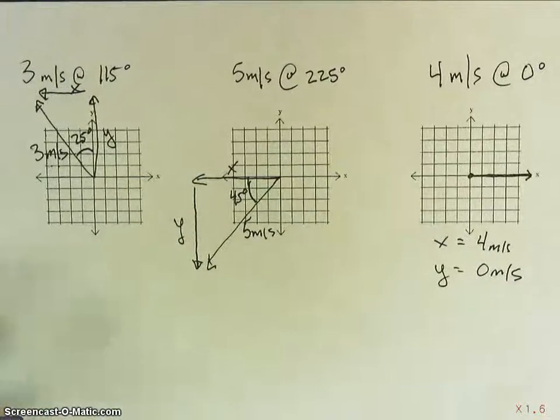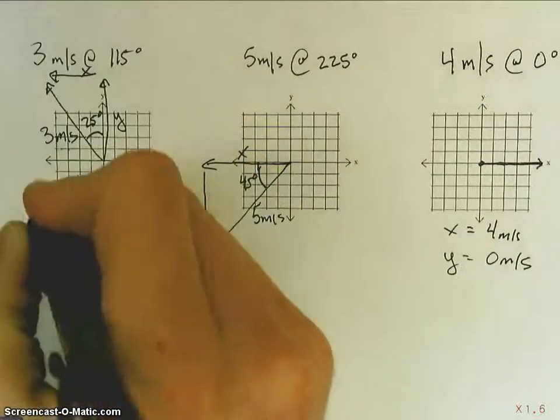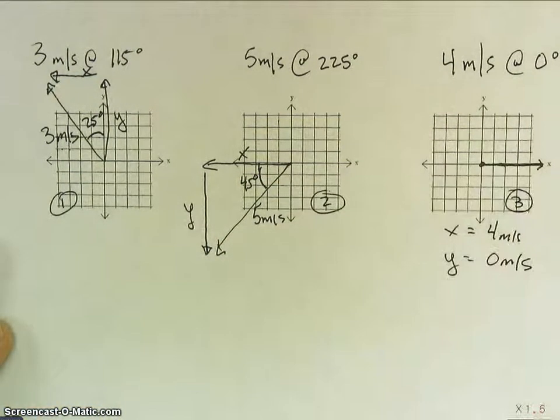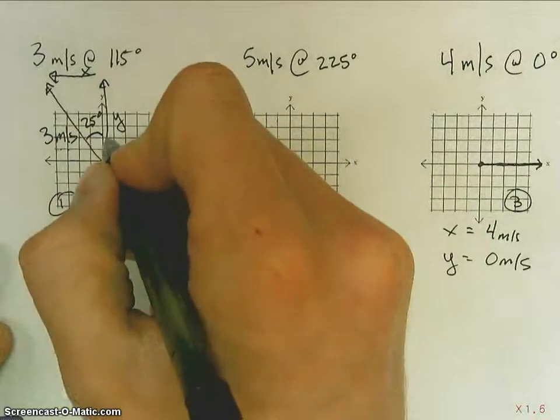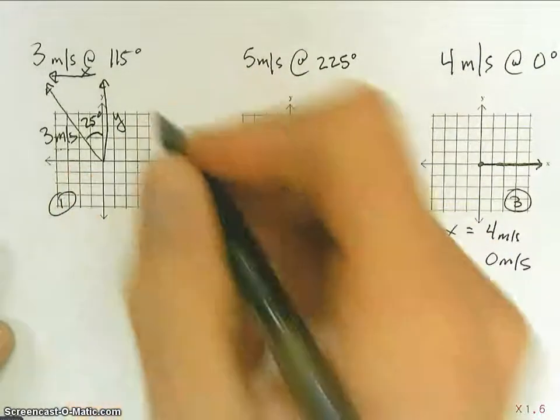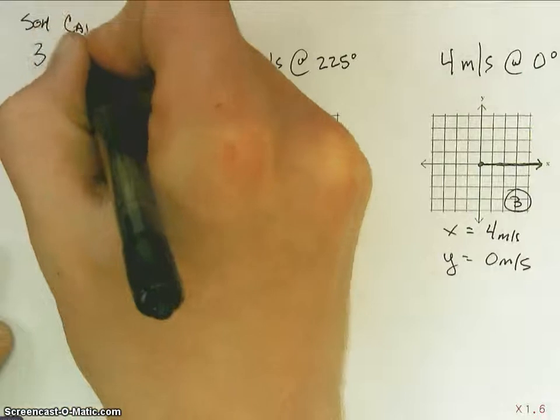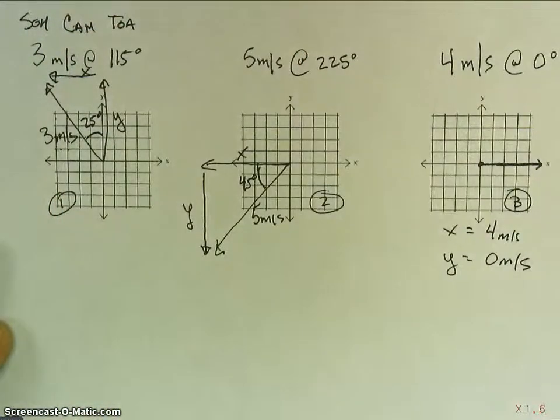So step two is solve for our vector components. For my first one here, we'll call this vector 1, this is vector 2, and we'll call that 3. For vector 1, I've got to figure out my x and my y. So, I'm going to look, and by the way, this is what we're using to find which function to use and so forth.